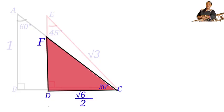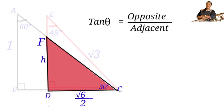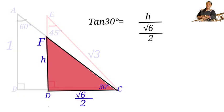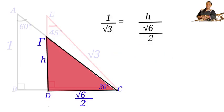Now focusing on triangle FDC. Let FD equal H. In this right angle triangle, one angle is 30 degrees and one side (DC) is √6/2. Using the trigonometric ratio tan(θ) = opposite / adjacent, with θ = 30°, we have tan(30°) = H / (√6/2), and since tan(30°) = 1/√3, we get 1/√3 = H / (√6/2).